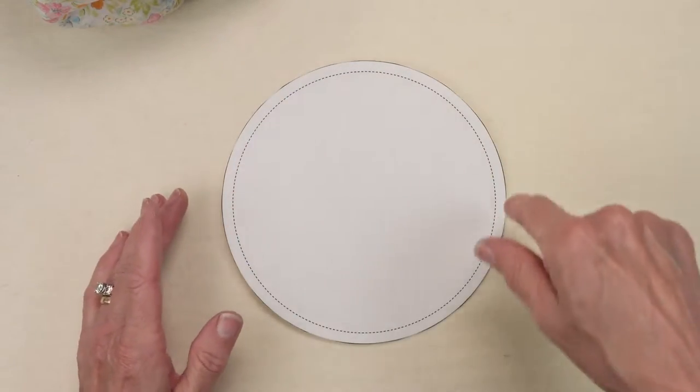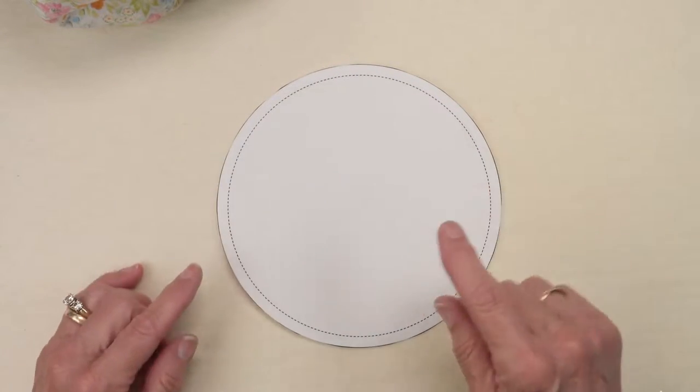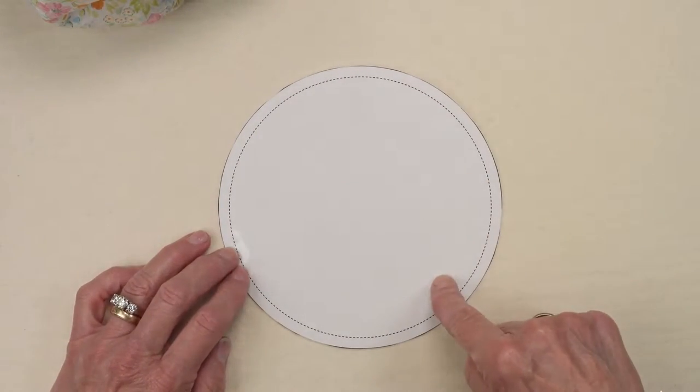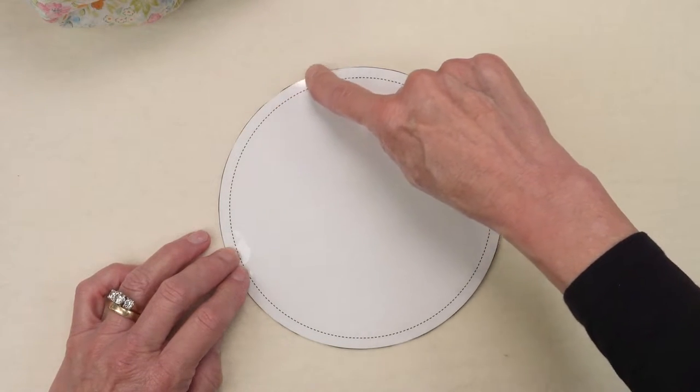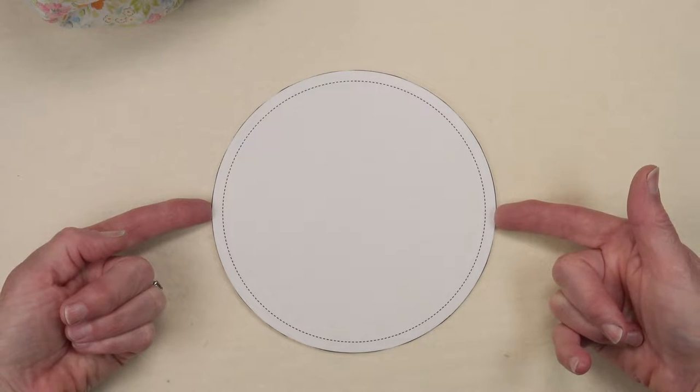How will you know how long to cut the strip? Well, you ask Google. So I started with a six inch square and added a quarter inch seam allowance. So I have a six and a half inch diameter circle.